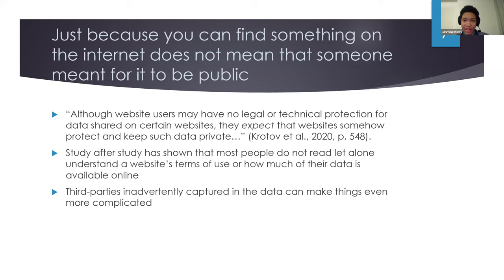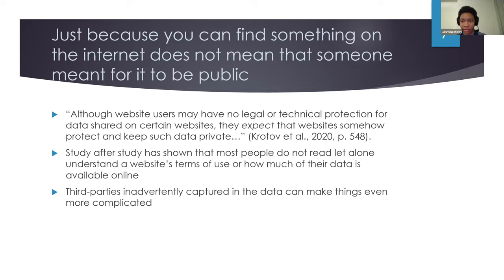Just because you can find something on the internet doesn't mean someone meant for it to be public. Website users often think things are somehow private even if they aren't. Study after study has shown that most people do not read, let alone understand, a website's terms and conditions or how much of their data is available online. And there are third parties that may be captured in the data — for example, you're probably in pictures your friends have taken, or your numbers have been shared with social media companies even if you don't use those services.